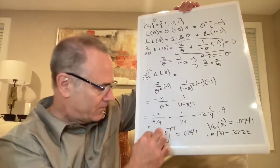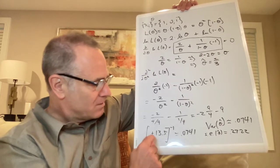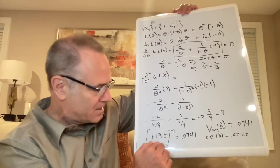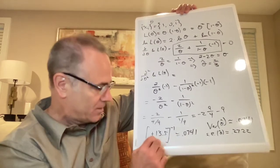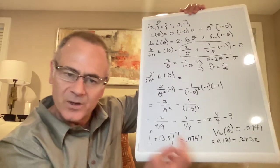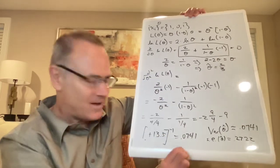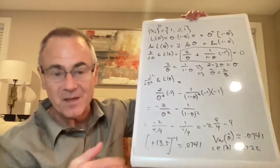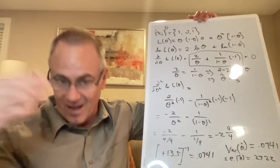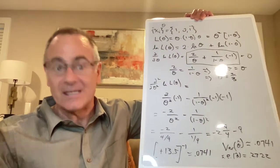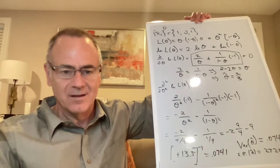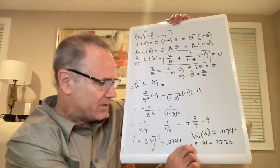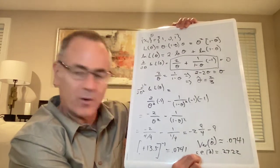And we took the second derivative, we got, I think, negative 13.5, took the negative of that, and then we got positive 13.5. And then we took the inverse of that, and then we got 0.0741, so that should be the variance of our estimator of our test statistic, the theta hat, and then the standard error should be equal to the square root of that, 0.2722.